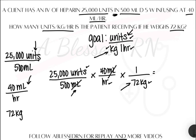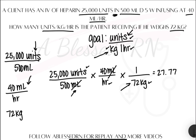Now we have our goal. We multiply the numerator, multiply the denominator, then divide the numerator by the denominator — the numbers on top divided by the numbers on the bottom. Our answer will be 27.77. And if asked to round to the nearest whole number, our answer is 28 units per kilogram per hour.